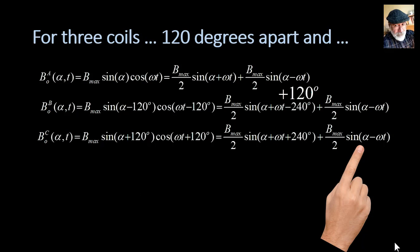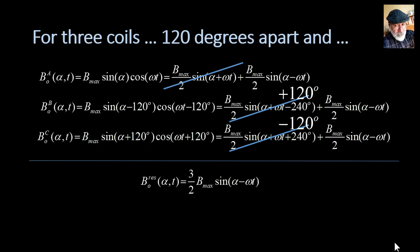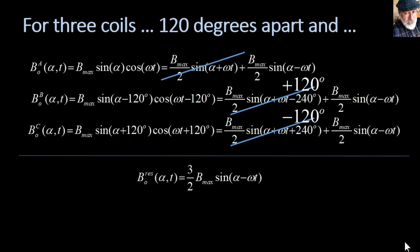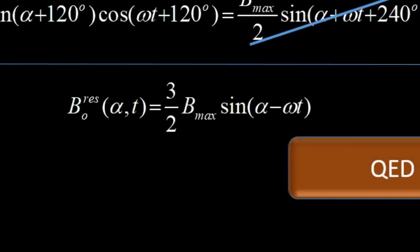If we add those three contributions together, then the fields that are rotating counterclockwise cancel out. Why? Because they are out of phase in space by 120 degrees. But the three fields that rotate clockwise from the three coils, they add up. And we have a net rotating magnetic field that is moving clockwise with a velocity omega, which is what we wanted to demonstrate.